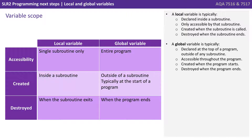A global variable is typically declared at the top of a program outside of any subroutine. It's therefore accessible throughout the program, and it's created when the program starts and destroyed when the program ends.